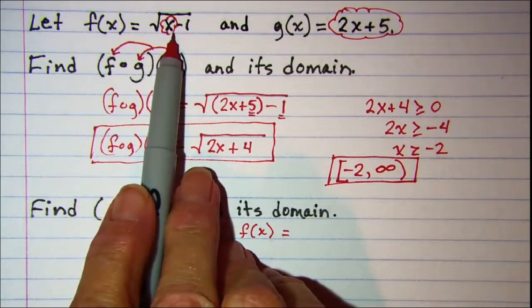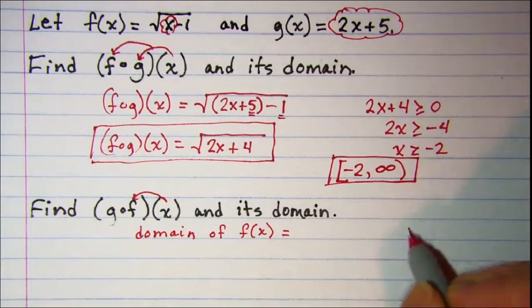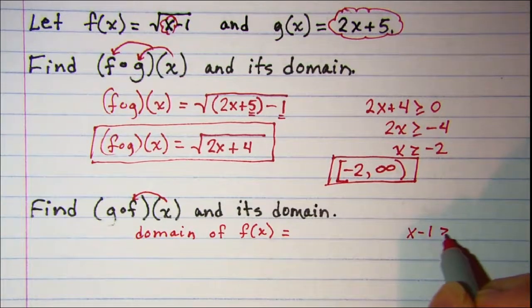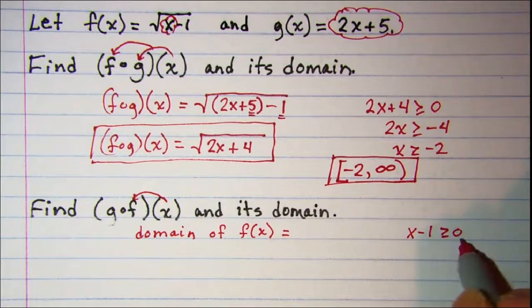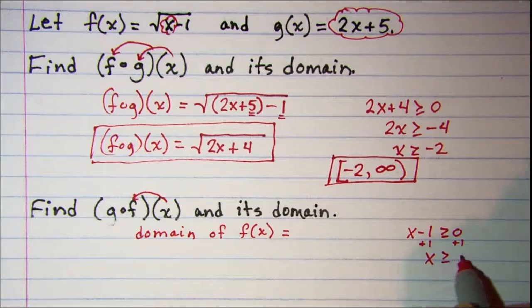So x minus 1 is greater than or equal to 0. Add 1 to both sides. x is greater than or equal to 1.